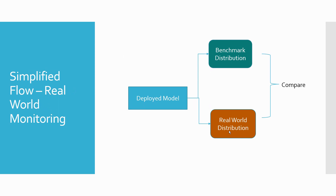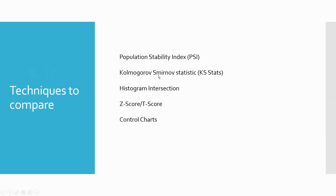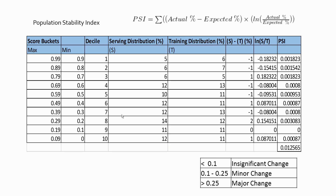There are multiple techniques to compare model distribution and data distribution. You have the Population Stability Index (PSI), which is a strong and easy one to use. You also have KS stats, histogram intersection, sensitivity analysis — where you check the sensitivity of features to your model output score — and z-score and t-score for data drift comparisons, where you check whether the incoming distribution falls within two standard deviations. There are also control charts where you can find the upper and lower control limits. I'm going to focus on PSI here.